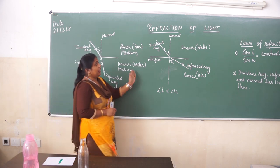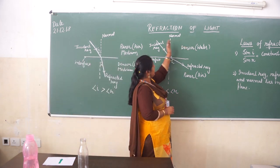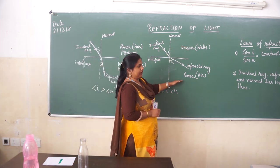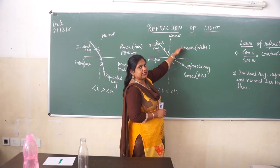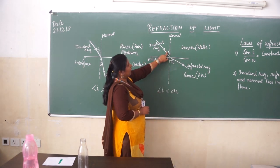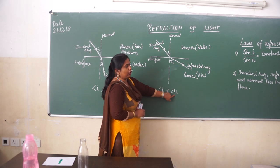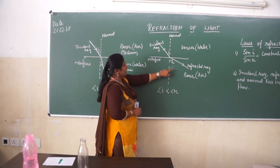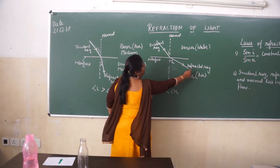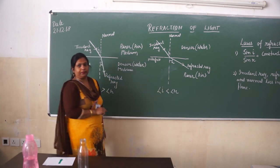But if a light ray goes from water to air — that is, from a dense medium to a random medium — then the angle of incidence will be less than the angle of refraction. In that case, the ray will move away from the normal.